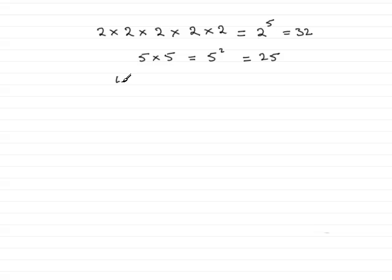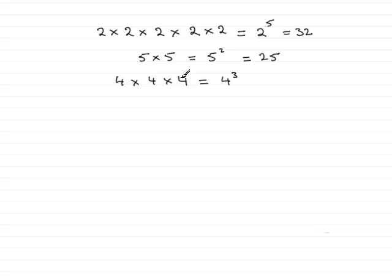Here's another one: 4 times 4 times 4. We could write this as 4 to the power 3. However, instead of calling this 4 to the power 3, to the power 3 is often called cubing. So this would be 4 cubed. And 4 cubed would be 4 times 4 which is 16, and 16 4's are 64. So when we have to the power 2, we call it squaring. When we have it to the power 3, we call it cubing.